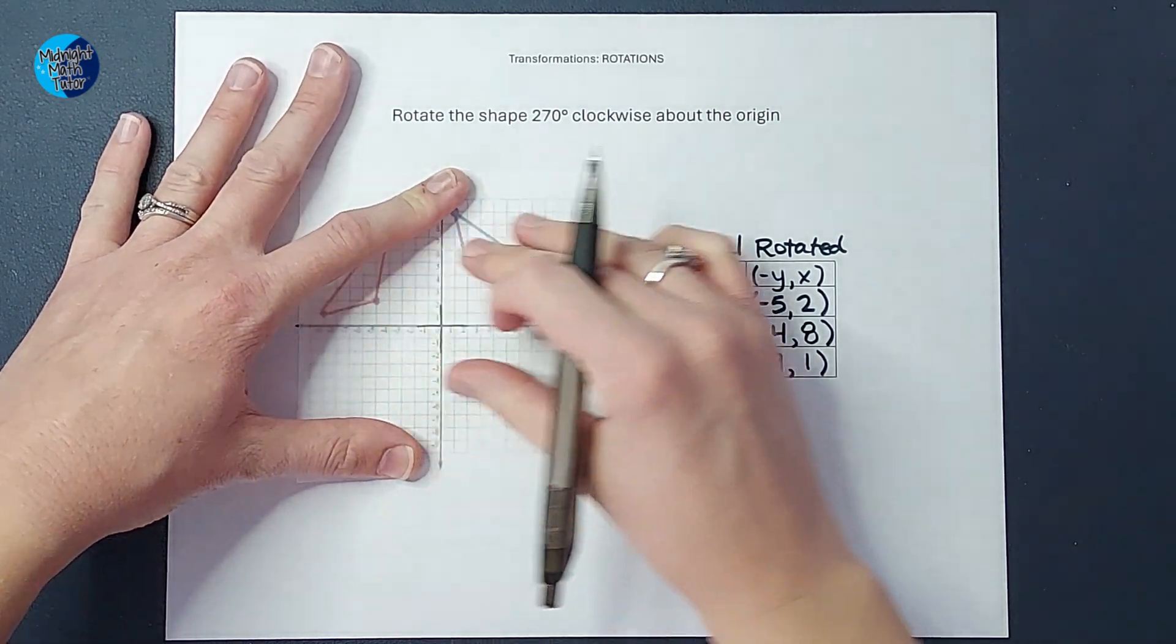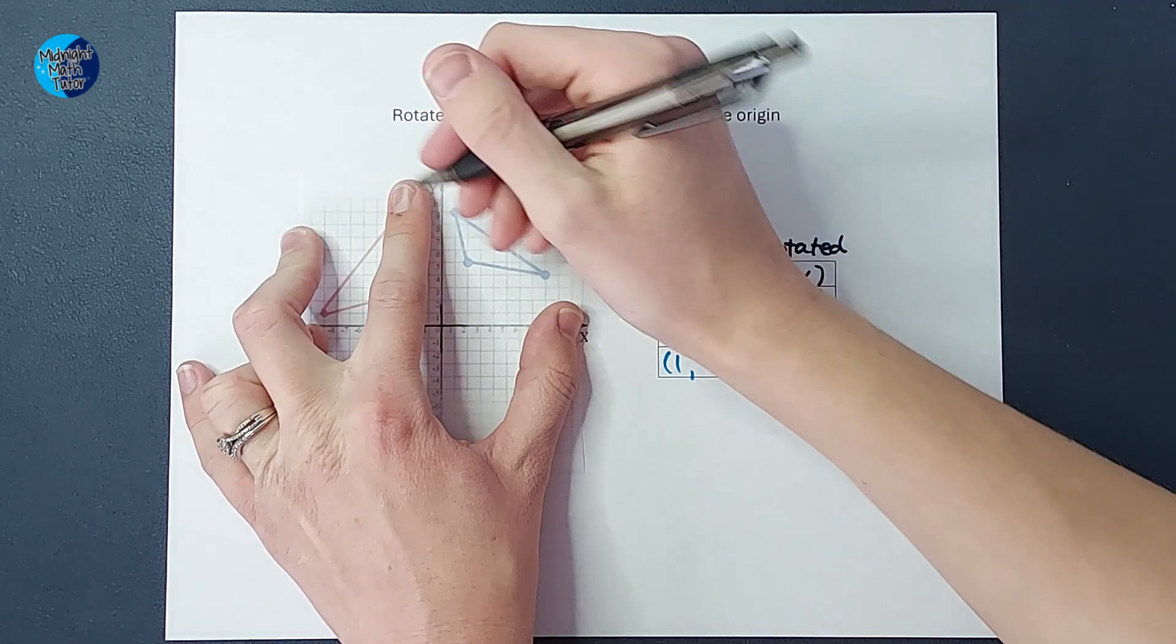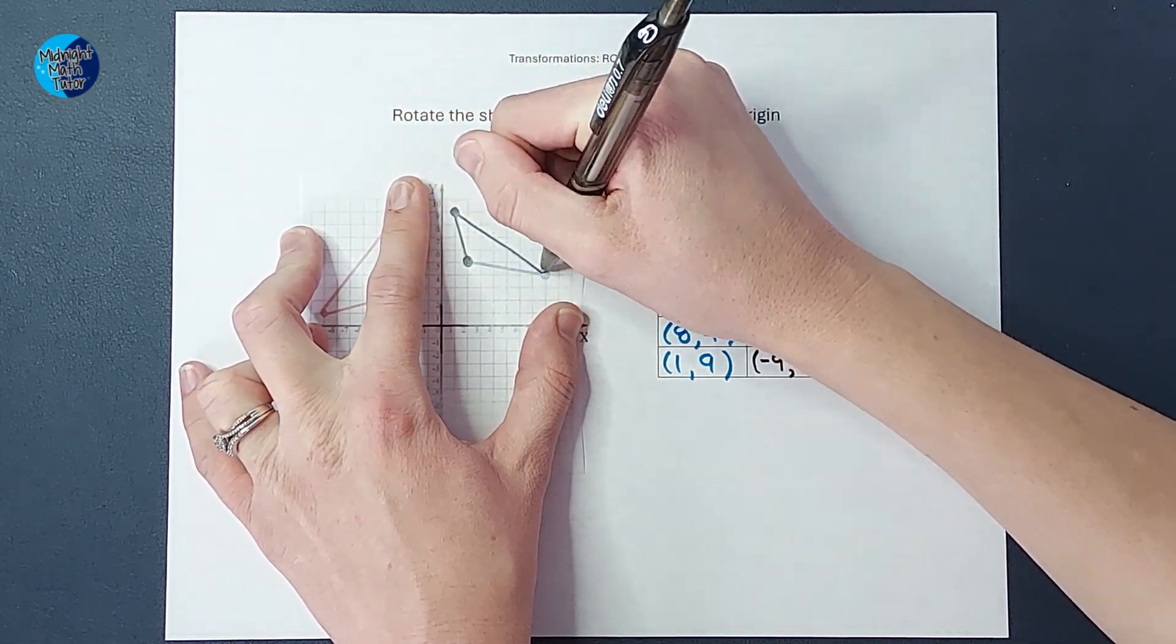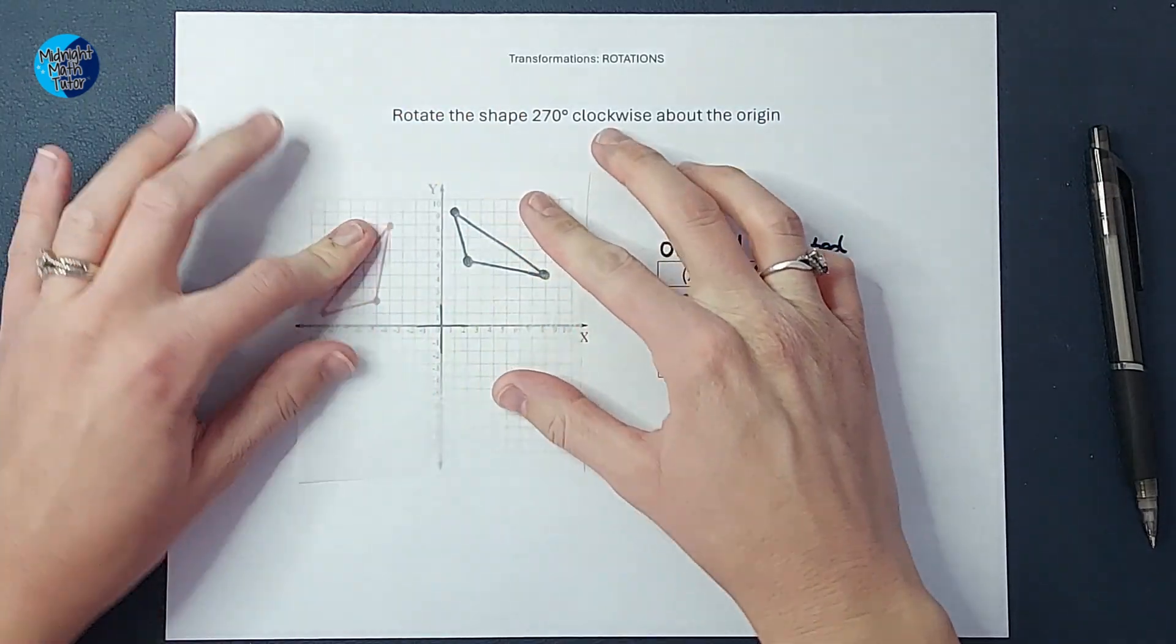I am going to label my coordinate plane here, which will help me keep it in line and see how much I'm rotating it, right? And then I'm going to trace this original triangle. All right, there we go.